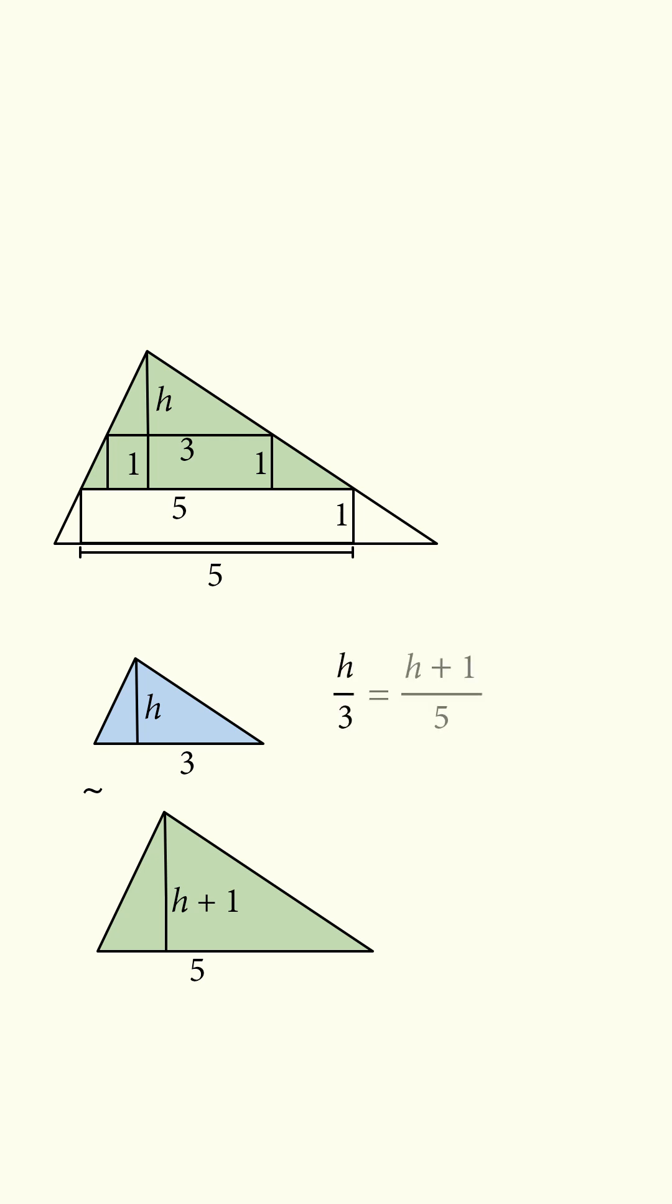Therefore, h upon 3 is equal to h plus 1 upon 5. Cross multiplying gives 5h is equal to 3 multiplied by the quantity h plus 1. This means 5h is equal to 3h plus 3, so 2h is equal to 3, and h is equal to 1.5.